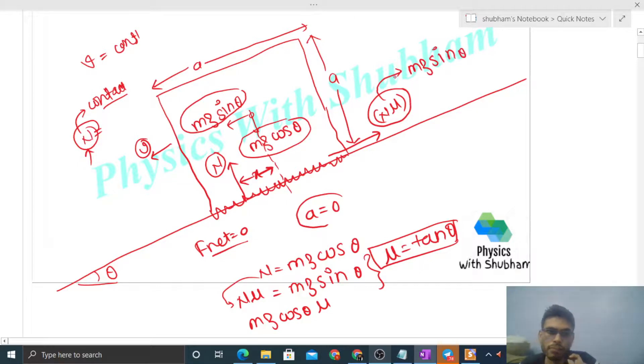Now net force is zero, but net torque will also be zero because this body is not rotating about its center. Net torque about center will also be zero. If we talk about torque, mg passes through the center so its torque is zero anyway.